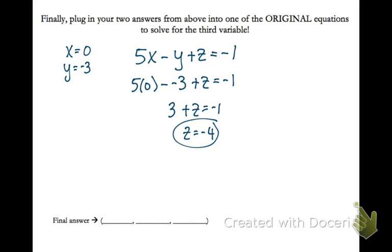Our final answer down here at the bottom, we're going to write it in alphabetical order. So since our variables are x, y, and z, that's the order that we're going to write our final answer. So we have the point 0 comma negative 3 comma negative 4. That's my x, y, and z.